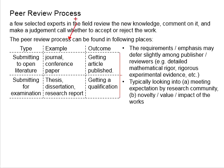The peer review process can be found in the following places. This includes submitting to open literature — that means we are talking about journals and conference papers. The outcome of the review is to decide whether the article gets to be published or not. There is another place where the peer review process can occur, which is submitting for the examination of theses, dissertations, and research reports.